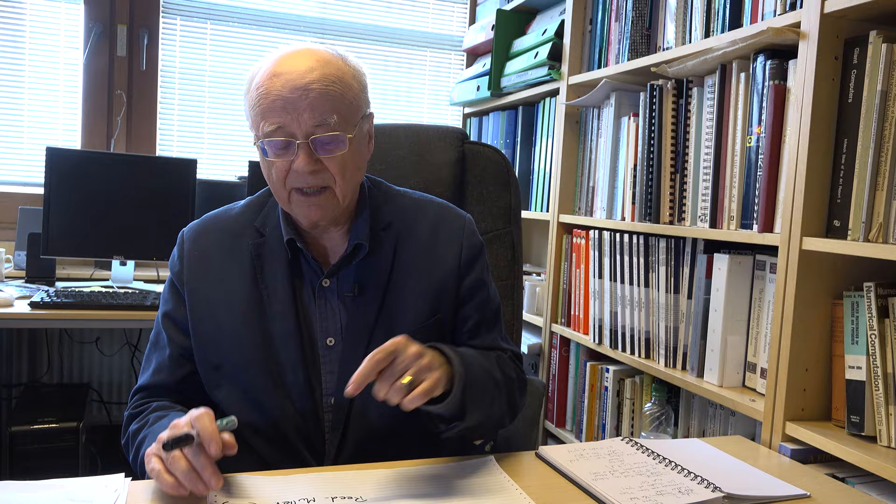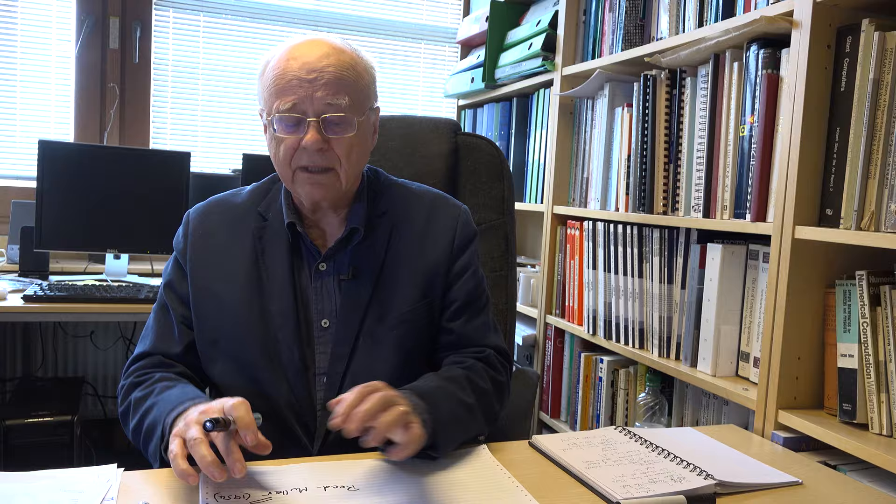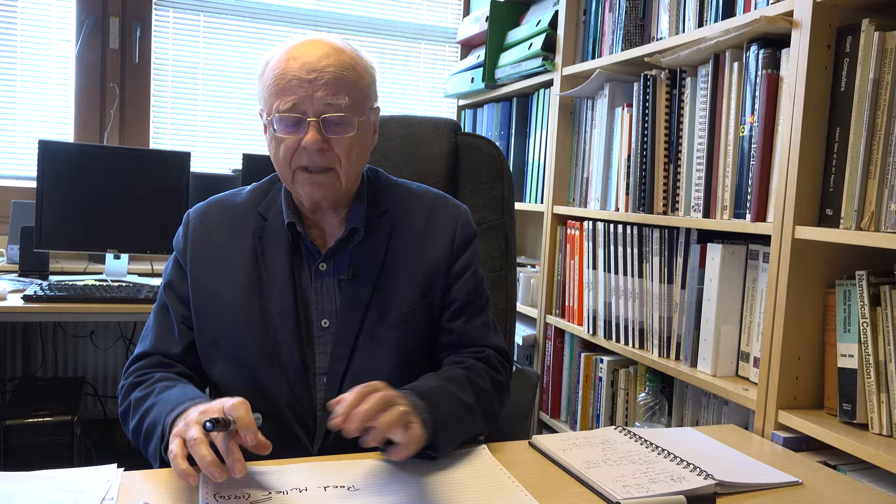The thing we are headed for at the end of our recursion is 32 bits total, 6 bits of message, and 16 is the distance. This magic code will actually correct up to 7 wrong bits in 32. The trade-off is we've only got 6 payload bits, whereas with things like Hamming codes it would have been more like 26. You pay your money, you make your choice.